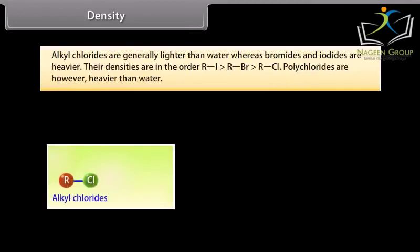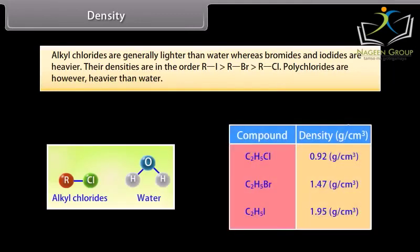Density. Alkyl chlorides are generally lighter than water, whereas bromides and iodides are heavier. The densities are in the order RI > RBr > RCl. Polychlorides are, however, heavier than water.